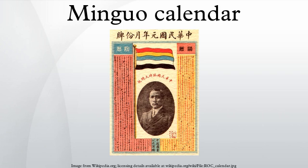The Republic of China calendar is the method of numbering years currently used in Taiwan and other territories under the control of the Republic of China. It was used in mainland China from 1912 until the founding of the People's Republic of China in 1949. Following the Chinese imperial tradition of using the sovereign era name and year of reign, official ROC documents use the Republic system of numbering years in which the first year was 1912, the year of the founding of the Republic of China. For example, 2015 is the 104th year of the Republic.